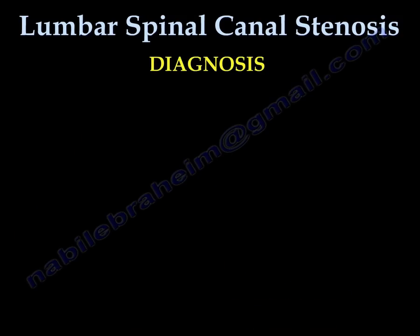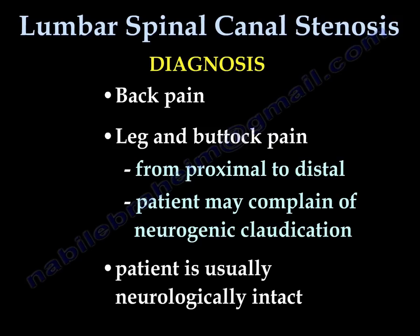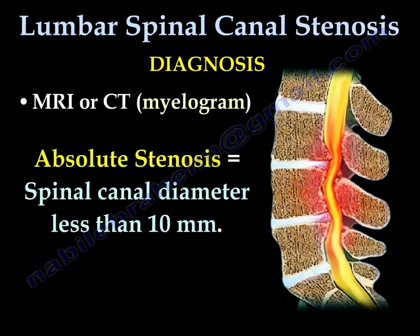Diagnosis: patients present with back pain and leg and buttock pain radiating from proximal to distal. The patient may complain of neurogenic claudication. The patient is usually neurologically intact. For radiological diagnosis, MRI or CT myelogram is important. Absolute stenosis is defined when the spinal canal diameter is less than 10 mm.